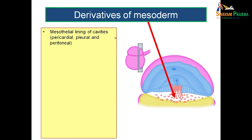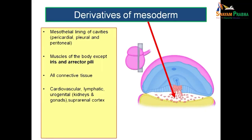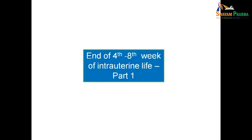In summary, the derivatives of mesoderm include: mesothelial linings of pericardial, pleural, and peritoneal cavities; all muscles of the body except those of the iris and erector pili; almost all connective tissue; the cardiovascular system; lymphatics; the urogenital system including kidneys and gonads; the suprarenal cortex; and all parts of the teeth except the enamel. That is all about the development of the embryo from 4th week to 8th week. This is the end of part 1; we will continue with part 2 in the next session.